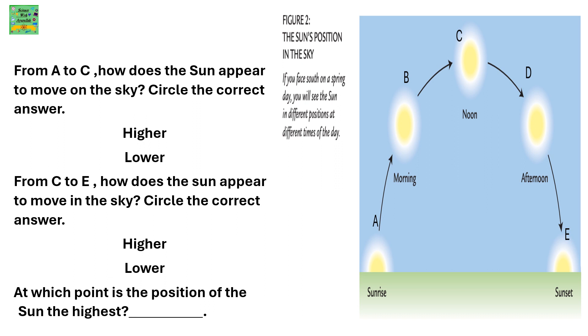From C to E, how does the sun appear to move in the sky? Circle the correct answer. Higher or lower?